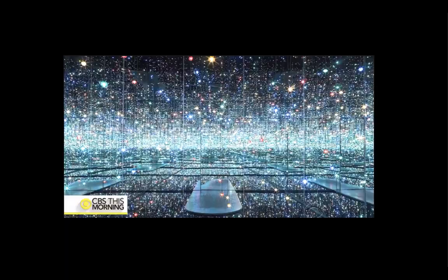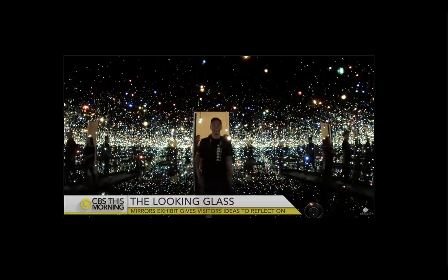Kusama states that a polka dot has the form of the sun, which is a symbol of energy of the whole world and our living life, and also the form of the moon, which is calm. Round, soft, colorful, senseless, polka dots become movement. Polka dots are a way to infinity.